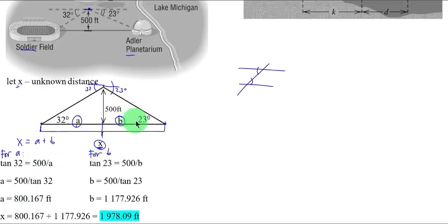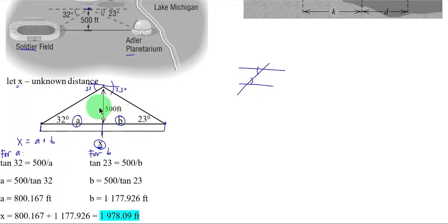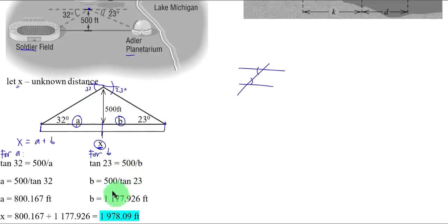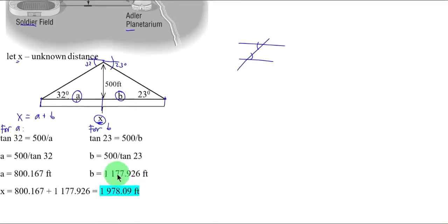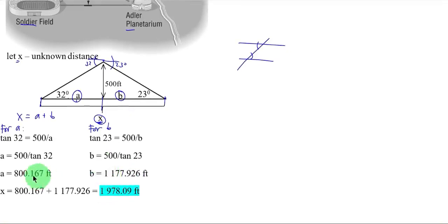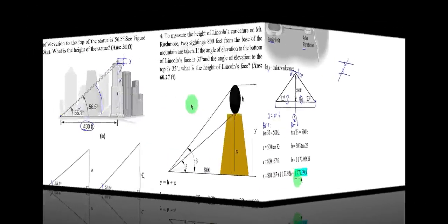Then for b, again, similar. So use tangent. So tangent 23. Opposite, that is 500 over b. So your b here is simply 500 over tangent of 23. So we have b as 1,177.926 feet. So adding these two, we have x, which is equal to 1,978.09 feet.